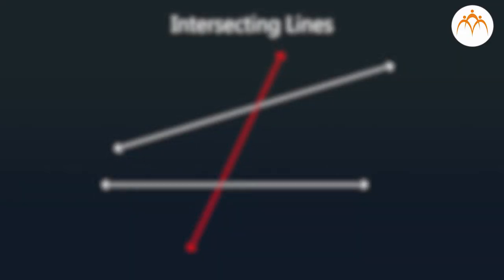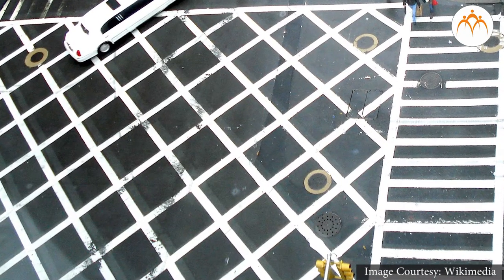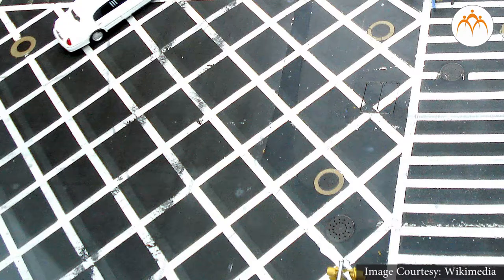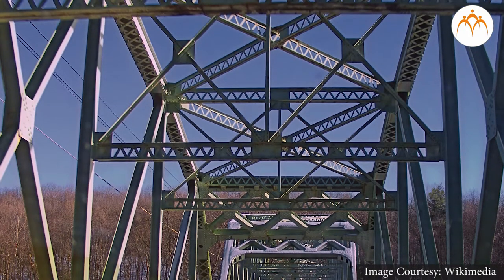You can see the use of this geometrical concept of intersecting lines cut by a transversal in our day-to-day life for various purposes. Look at this picture of intersecting white lines marked on the road, a flag, and a bridge. You can see how intersecting lines and a transversal are used for construction purposes here.